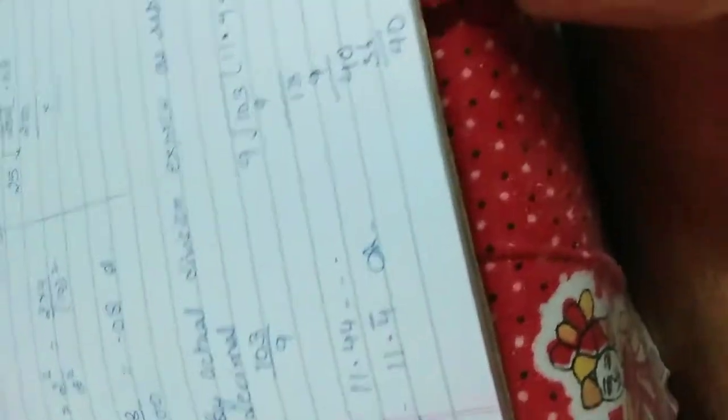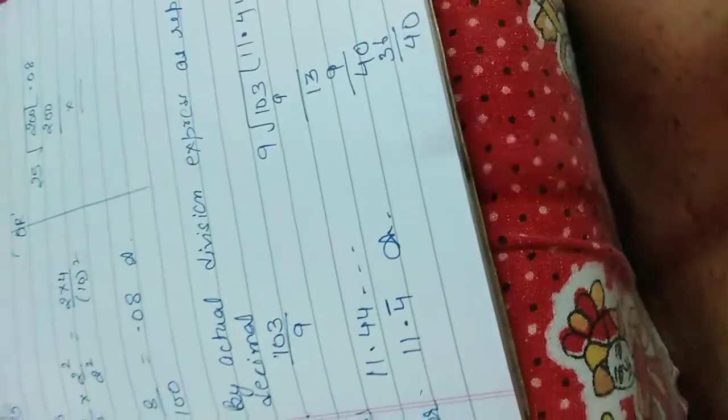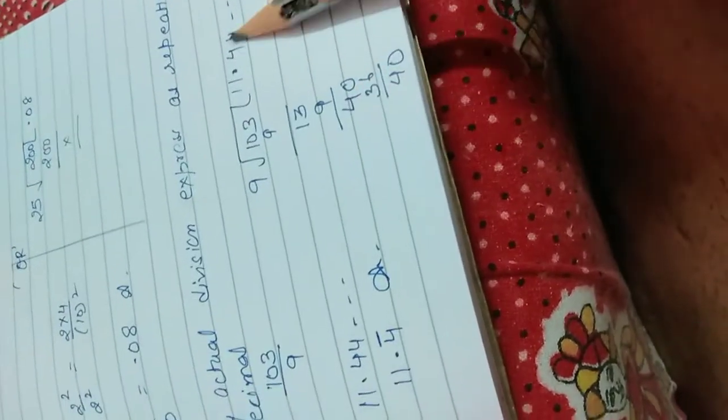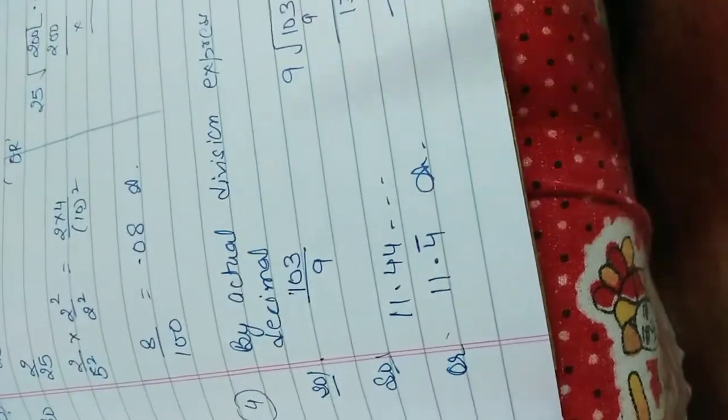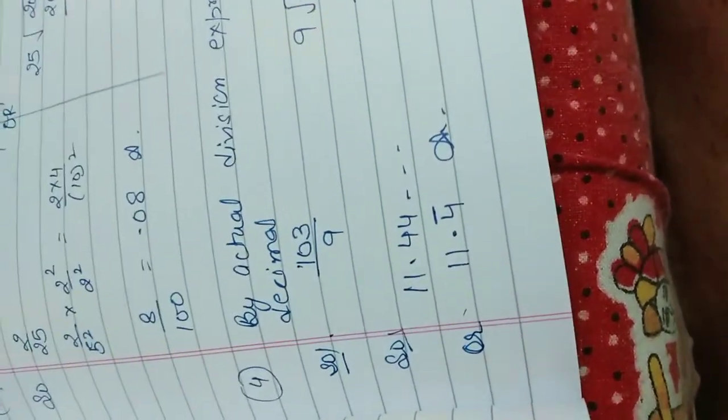Next is by actual division you have to find, this is repeating, then you have to show with the division. If it is going on and on, then put that as a bar. Hope so it is understood. Thank you, have a nice day.